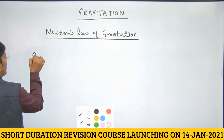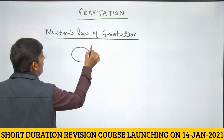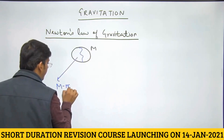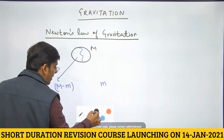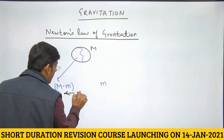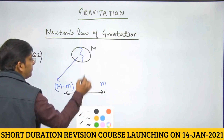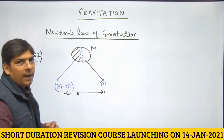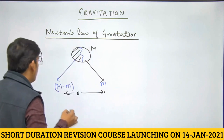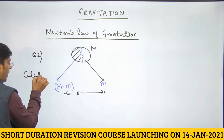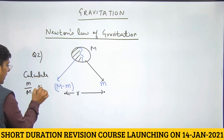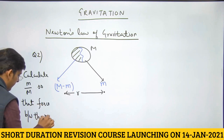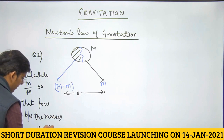We have another question based on maxima and minima. You have a mass capital M and you divide it into two parts: one part is (M − m) and the other is small m. You keep these two masses some distance apart. Calculate the value of m/M so that the gravitational force between the two fragments is maximum.